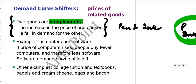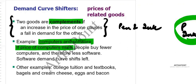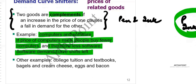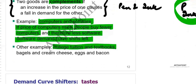The same applies to computer and software. If the price of computer increases, people will buy fewer computers, and since software is used inside computers, people will buy less software too — the software demand curve will also shift to the left. Other complement examples include college tuition and textbooks, bagel and cream cheese, and eggs and bacon.